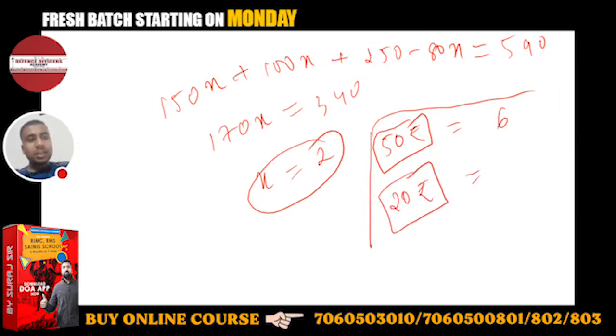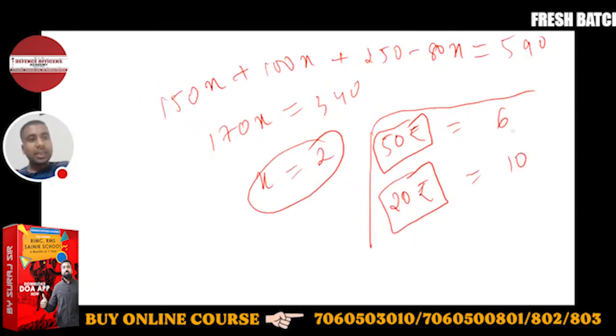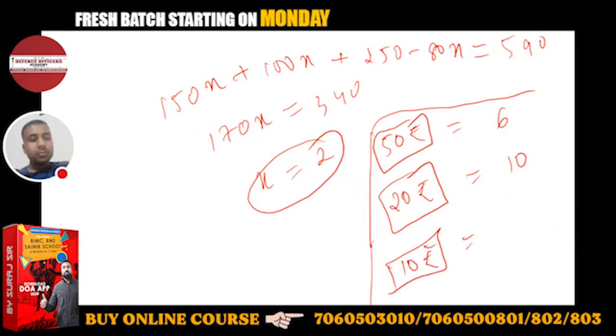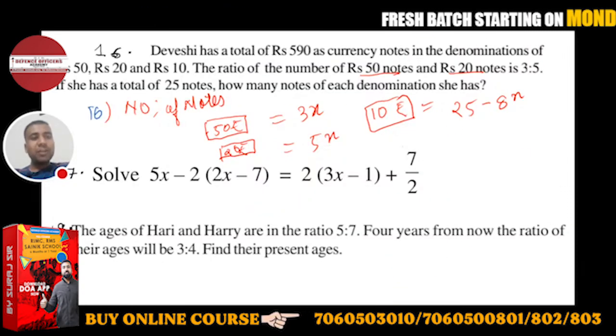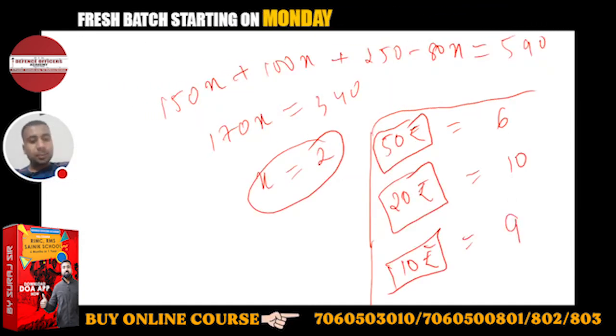20 rupees ke notes kitne jayenge? 20 rupees ke notes are 5x, 5 into 2, so 10. And 10 rupees ke notes kitne jayenge? 10 rupees ke notes will be 25 minus 8x. X is 2, so 25 minus 16, so it will be 9. Okay.